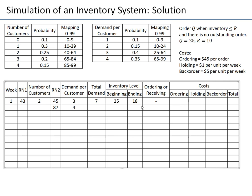My costs for week one: I'm holding 18 units to the next week at $1 per week, so the holding cost is $18. There is no ordering cost since we didn't order, and no back order cost since we still have units in inventory. So my total cost per week one is $18. That completes the simulation of the first week.